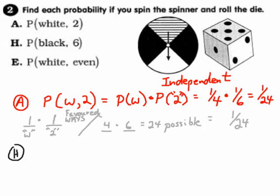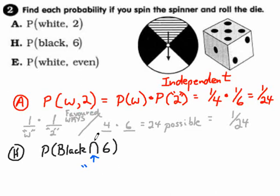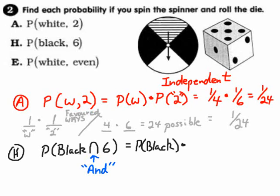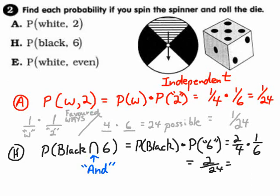What's the probability of spinning a black and then rolling a six? That intersection symbol — the upside-down horseshoe — means 'and.' So probability of black AND six: probability of black = 2 out of 4, times probability of rolling a six = 1 out of 6. That's 2/24, which reduces to 1/12. Those were independent events.